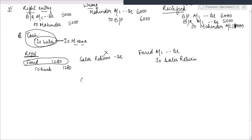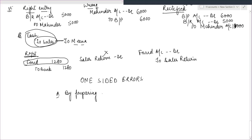One-sided errors are those which affect one account and one aspect only. Normally, these errors affect the trial balance. These errors can be rectified by preparing a ledger account of that affected account, or by opening a suspense account.